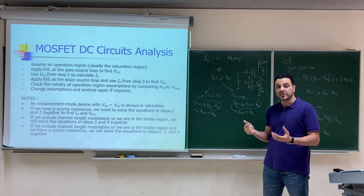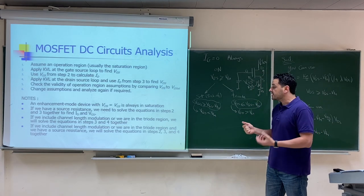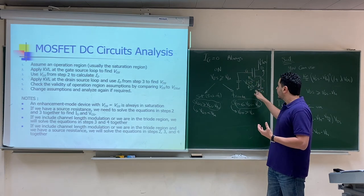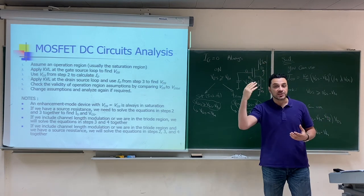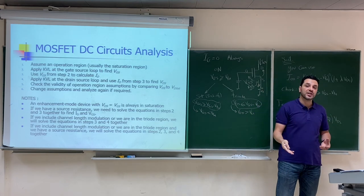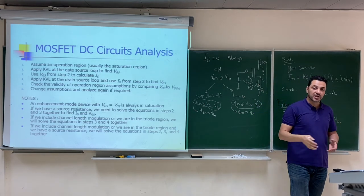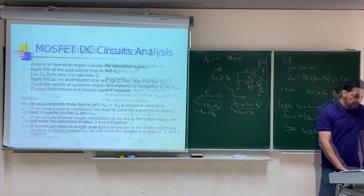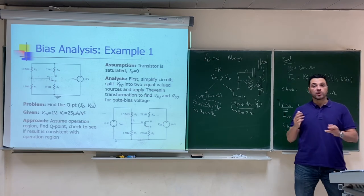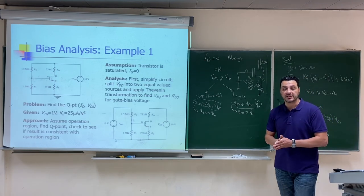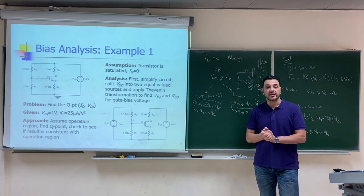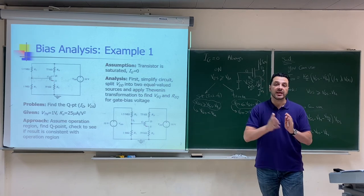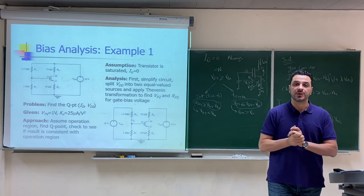To summarize the procedure: first assume saturation; start with the gate-source loop, then the drain-source loop; if the saturation assumption is wrong, move to assuming triode. In the next video, we will start with the first example and see how to apply this procedure on different problems.